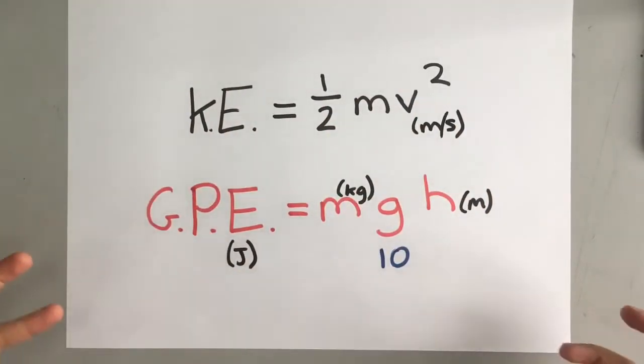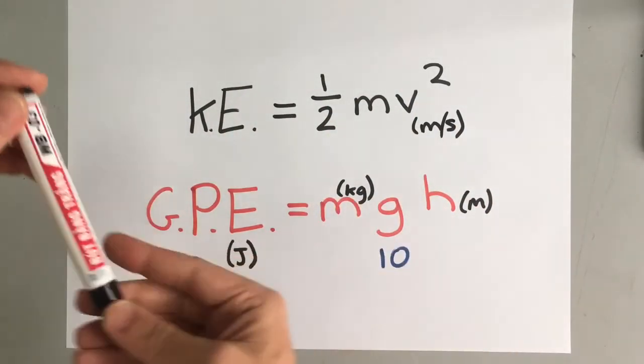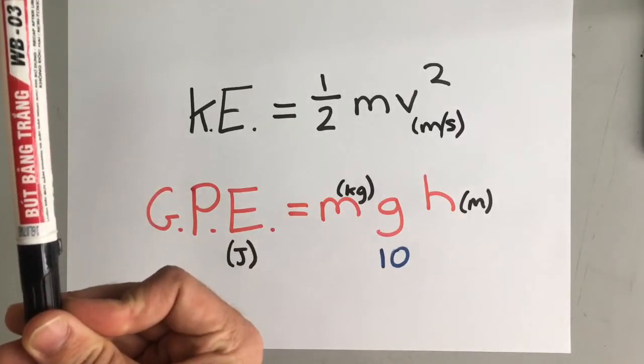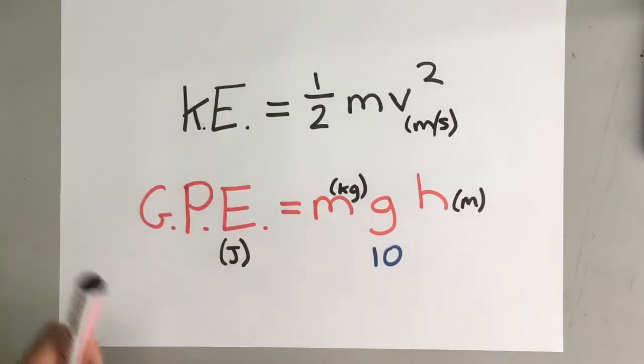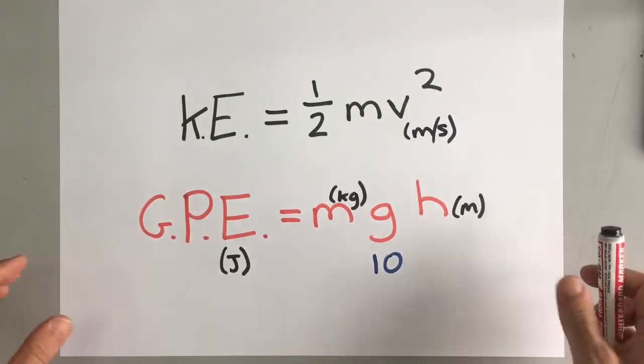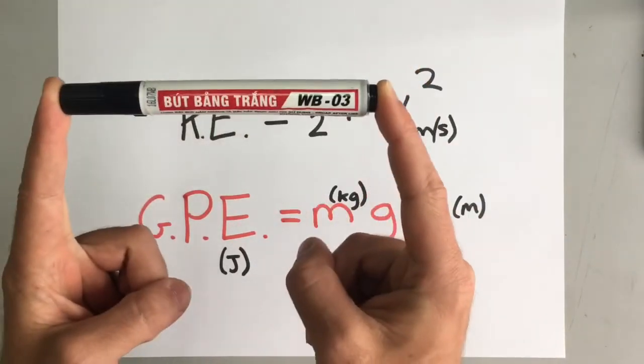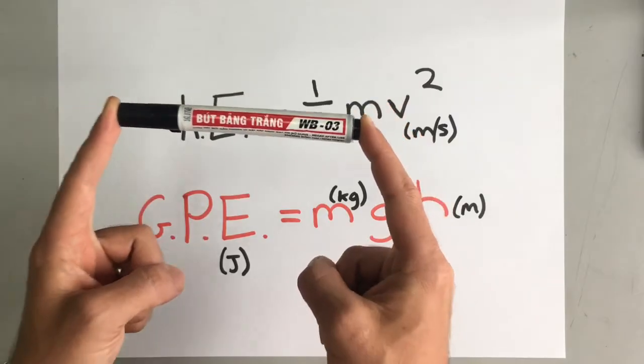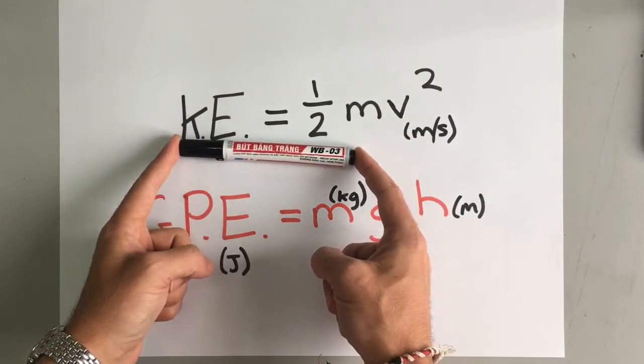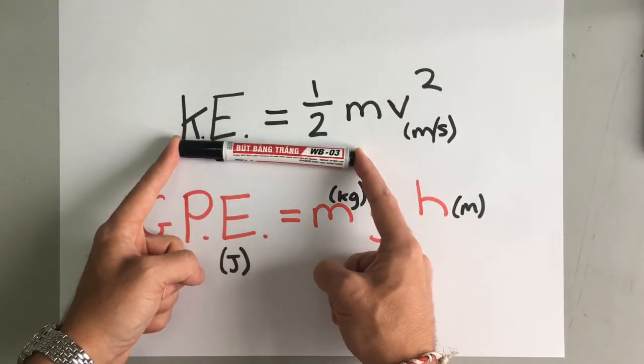Now we've got two equations. And we've also got some good knowledge in that when something has gravitational potential energy and we let it go, it converts into kinetic energy. And we know that energy cannot be created or destroyed. It can only be converted. So, all of the gravitational potential energy that this pen has at the top is converted into kinetic energy by the time it reaches the bottom of its fall.